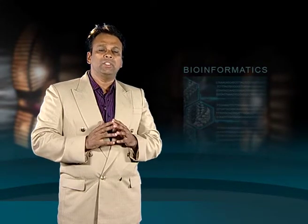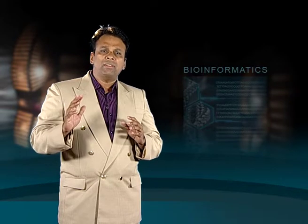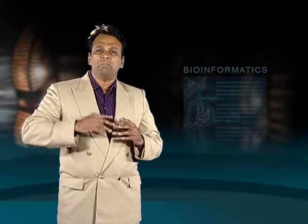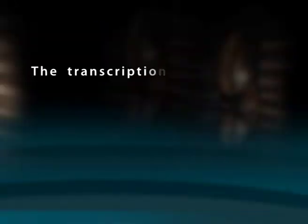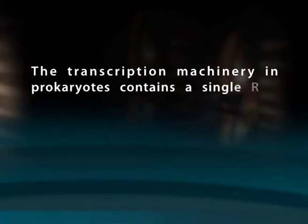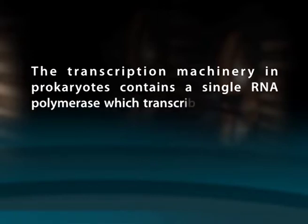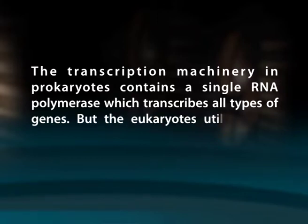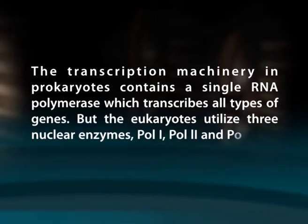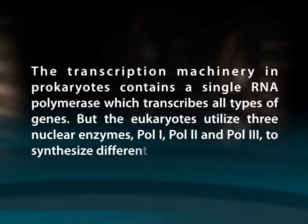RNA polymerase performs multiple functions in this process. The transcription machinery of eukaryotes is much more complex than that of prokaryotes. The transcription machinery in prokaryotes contains a single RNA polymerase which transcribes all types of genes. But eukaryotes utilize three nuclear polymerases — polymerase 1, polymerase 2 and polymerase 3 — to synthesize different classes of RNA.